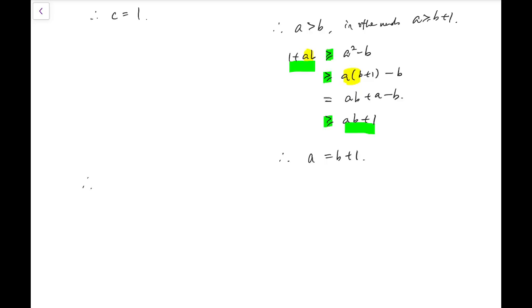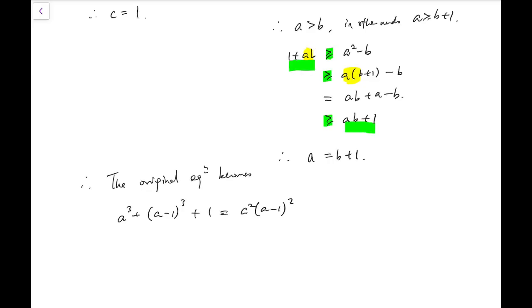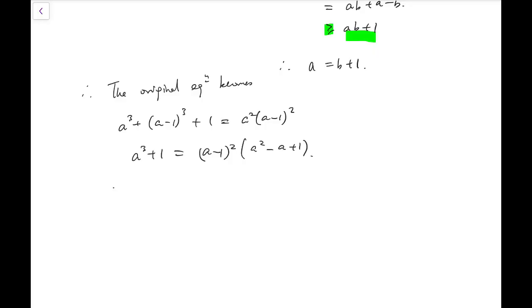Now I am going to put this back into the original equation. It becomes a cubed plus a minus 1 whole cubed plus 1 equals a squared times a minus 1 whole squared. And so a cubed plus 1 equals a minus 1 whole squared times a squared minus a plus 1. So it's just ordinary algebra. I expand twice, left-hand side. And after some algebra, we have this.